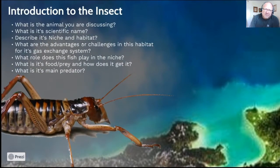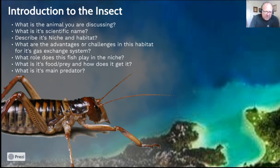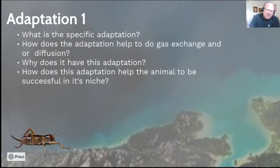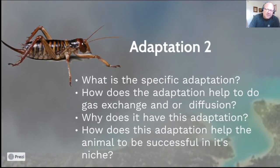We then go to Animal 3, which is the insect — in this case a weta. Exactly the same structure as before: scientific name, niche, role, food and prey, main predator. For example, when a kiwi bird is chasing a weta it needs a lot of oxygen, so the weta has air sacs that help it scurry through the forest floor. Even if it needs to close its spiracles to keep dust out, there will still be an ample supply of air inside the weta's air sacs. Again, three adaptations, same format.